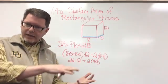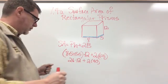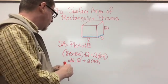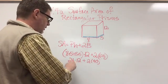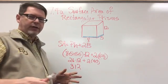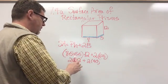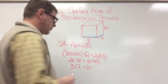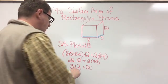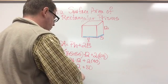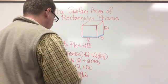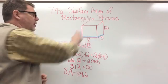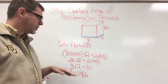So 26 times 12 is 312, and then plus 80. So 312 plus 80 is 392. The total surface area of this rectangular prism is 392 square inches.